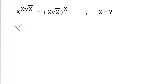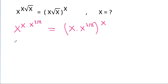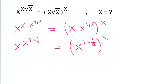So it is x power x times root x, which is x power 1 by 2, that is equal to x times root x, which is x power 1 by 2, all power x. So x power x times x power 1 by 2 is x power 1 plus 1 by 2 power x, and it is x power x power 3 by 2 is equal to x power 3 by 2 power x.